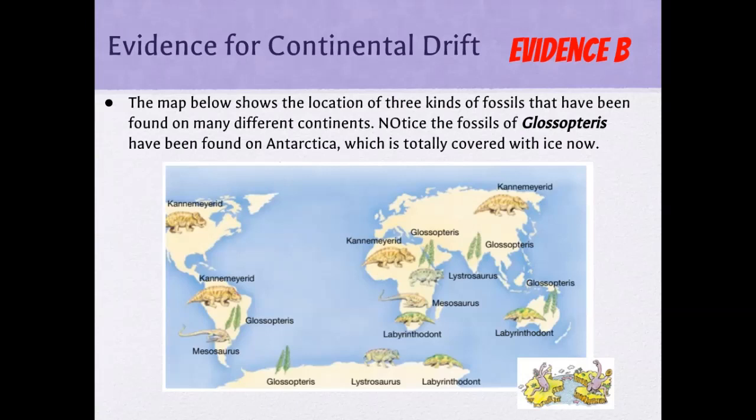There are other examples as well, like the plant Glossopteris, found in both Antarctica and South America. First off, I'm not aware of plants like this growing in Antarctica today. So clearly, at some point, this landmass would have needed to be further towards the equator and possibly connected to South America, where it's quite warm — another piece of evidence for landmass movement.